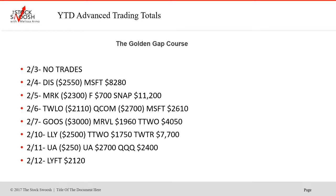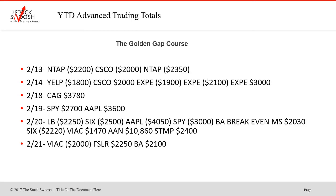February 4th, Disney was a loser, Microsoft winner. 5th, MRK lost, Ford won, Snap won. TWLO was a loser, Microsoft winner. February 7th, Goose was a loser, Marvell winner, T2 was a winner. February 10th, Lilly lost, T2 won, Twitter big winner. The 11th, UA lost, second one worked, Qs were a winner. Lyft on the 12th — that was a good gap. 13th was NTAP loser, Cisco loser, NTAP another loser — retake, didn't follow through. 14th, Yelp lost, Cisco won, EXP lost.